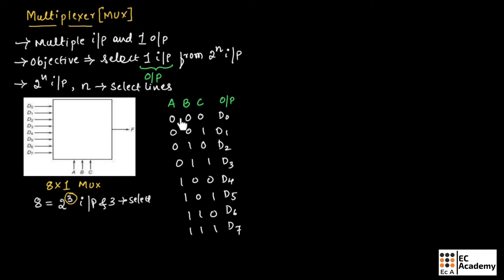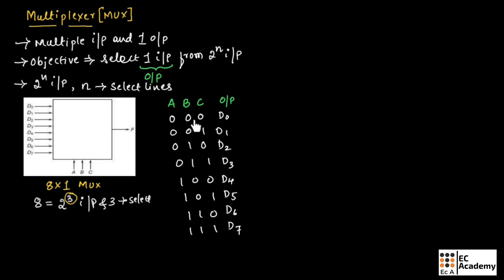If the select line is 0, 0, 0, the output of the multiplexer will be D0. To get output as D4, the select line should have the value 1, 0, 0. To get output as D7, the select lines should have the value 1, 1, 1. So for select line 0, 0, 0, the values of A, B, and C should be A-bar, B-bar, C-bar. For D3, we should have A-bar, B, C. For D6, the select line should be A, B, and C-bar.